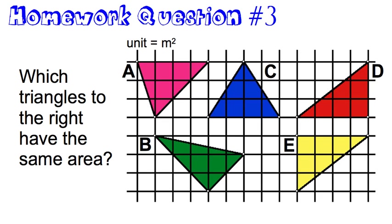Here is homework question 3. You're going to look at triangles A, B, C, D, and E and find the area for each. Then go to your Google form and answer: which of these triangles have the same area? Find the area of each and see which ones match.